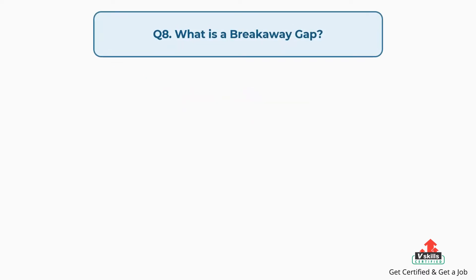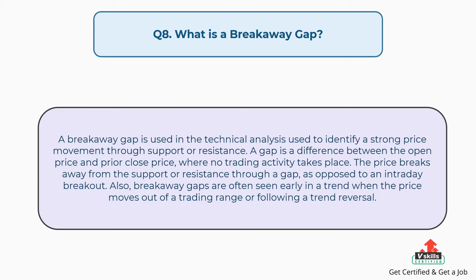Question number 8: What is a breakaway gap? A breakaway gap is used in technical analysis to identify a strong price movement through support or resistance. A gap is a difference between the open price and prior close price, where no trading activity takes place. The price breaks away from the support or resistance through a gap, as opposed to an intraday breakout. Also, breakaway gaps are often seen early in a trend when the price moves out of a trading range or following a trend reversal.